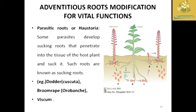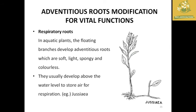For vital functions, adventitious root modifications include parasitic roots or haustoria, found in some parasites that penetrate the host plant and suck nutrients from it; examples: Cuscuta and broomrape. Respiratory roots are found in aquatic plants — adventitious roots that are soft, light, spongy, and colorless, developing above water level to store air for respiration; example: Jussiaea.